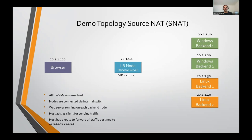The VIP used in this demo is 4.1.1.1, which is not in the same network as the other addresses. Since this is an internal switch, the host will also be connected to the same switch and will act as a client for sending requests to the LB node. All four back-end servers are running a web server listening on port 80.